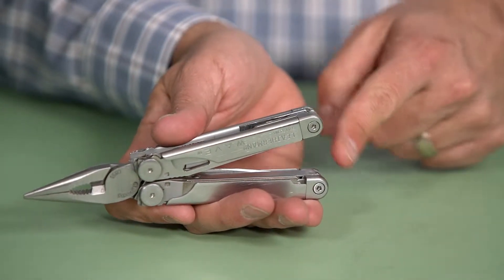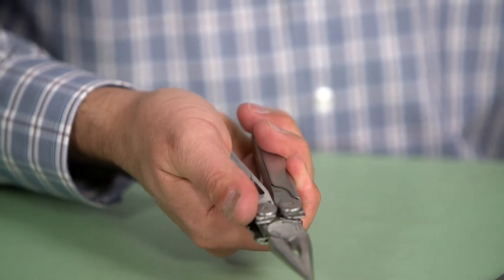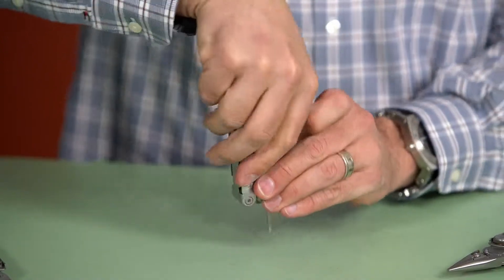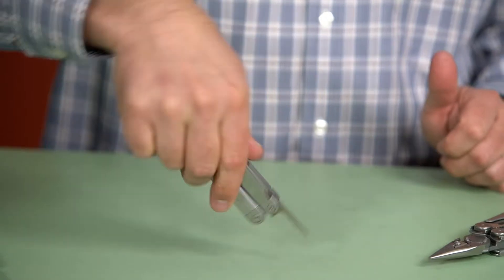The original specification for the Wave was handle comfort and easy access to the knife blade, so that when you open it and use it you can squeeze on it and cut and bend things with it all day long.